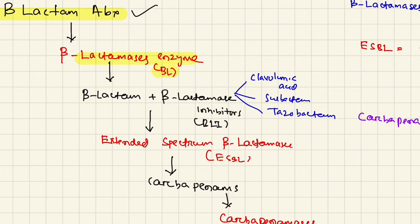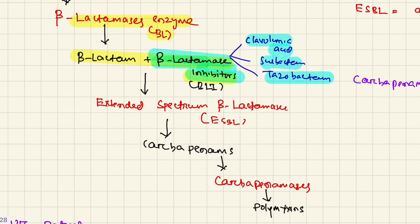Scientists produced beta-lactamase inhibitors (BLIs) - clavulanic acid, sulbactam, and tazobactam. We have BL-BLI combinations active against most bacteria. But then bacteria produced another enzyme called extended spectrum beta-lactamase (ESBL). ESBL-producing bacteria become resistant to most previous antibiotics including BL-BLIs, but we produce carbapenems which are active against ESBL-producing organisms. Then there are carbapenemases, and we have polymyxins.